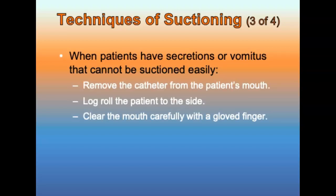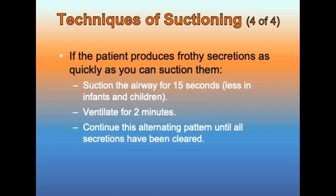Sometimes a patient may have secretions or vomitus that cannot be suctioned quickly; some units cannot remove objects such as teeth, foreign bodies, or food. In these cases, remove the catheter, log roll the patient onto their side, and clear the mouth carefully with a gloved finger. If a patient requiring assisted ventilations produces frothy secretions, suction for 15 seconds (less for infants and children), then ventilate for two minutes, continuing this alternating pattern until the airway is clear. Continuous ventilation is not appropriate if vomitus or particles are present in the airway.